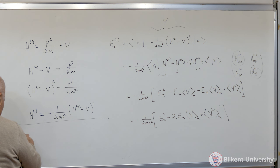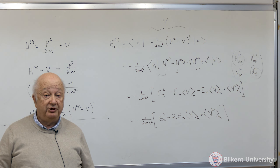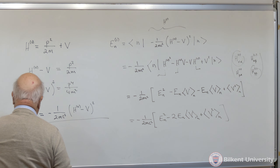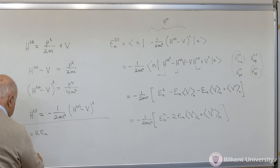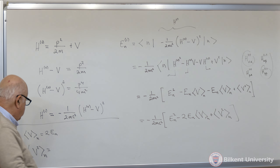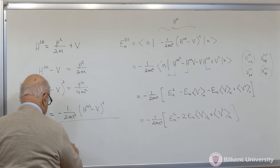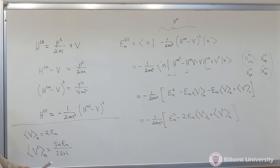Remember that the expectation value of V in the nth state was equal to 2En — En is a negative energy — so the expectation value of the potential energy turned out to be 2En. We used the Feynman-Hellman theorem to obtain that. We similarly obtained what the expectation value of V squared was: it turned out to be 8n En divided by (2l plus 1).